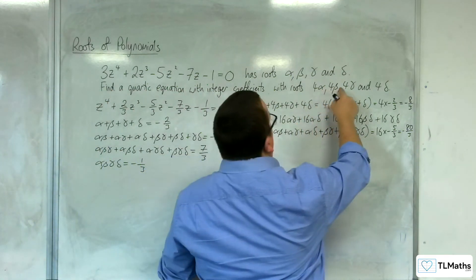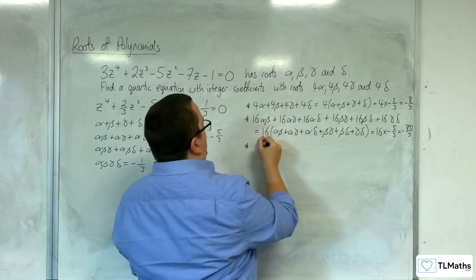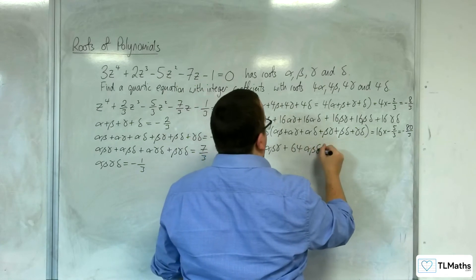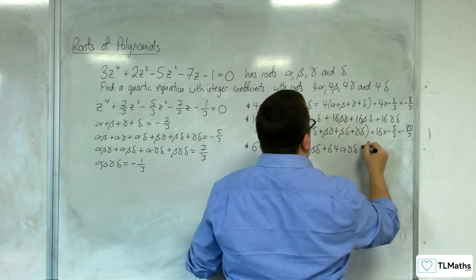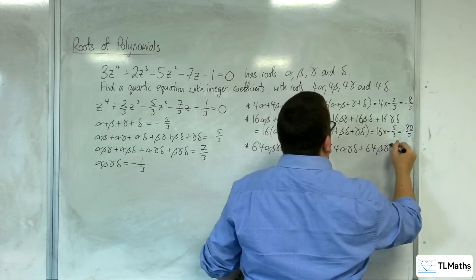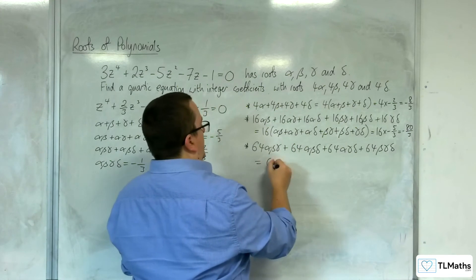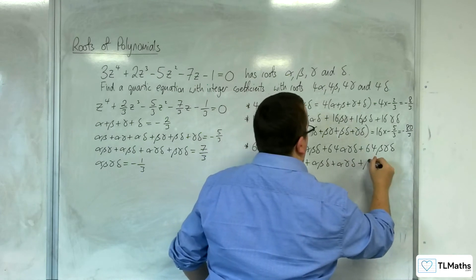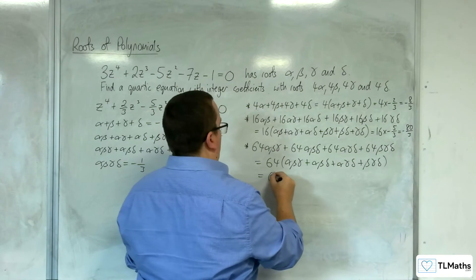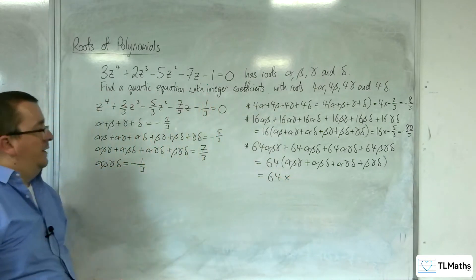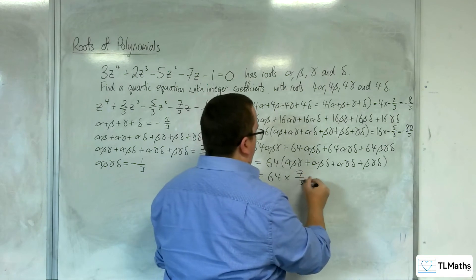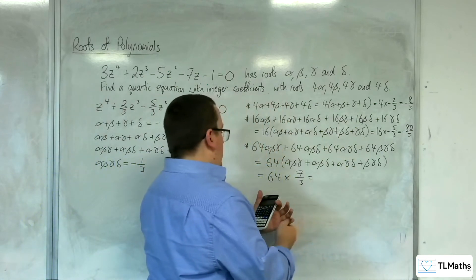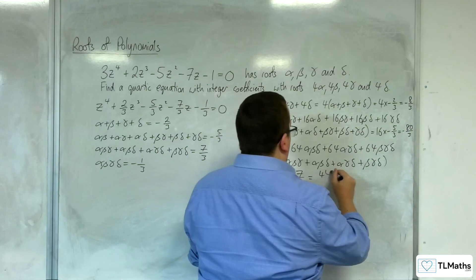Next, 4 × 4 × 4 = 64. So we get 64 alpha·beta·gamma + 64 alpha·beta·delta + 64 alpha·gamma·delta + 64 beta·gamma·delta, which is 64 lots of (alpha·beta·gamma + alpha·beta·delta + alpha·gamma·delta + beta·gamma·delta). That value was 7/3, so 64 × 7/3. 64 times 7 is 448, giving us 448/3.